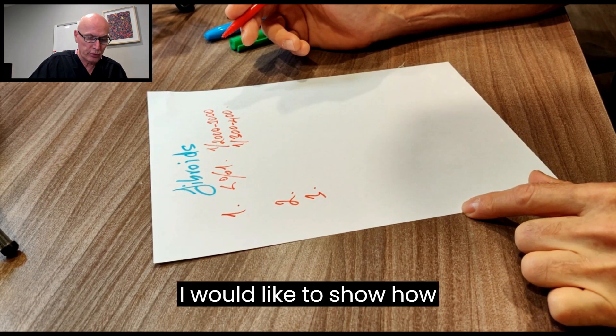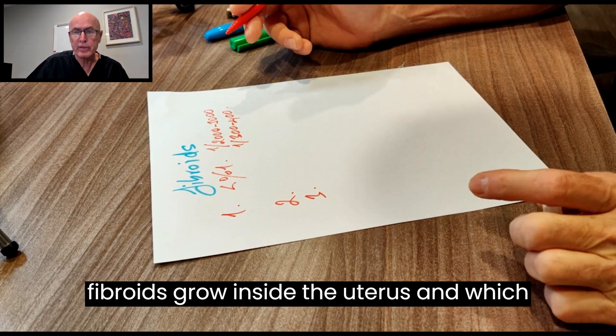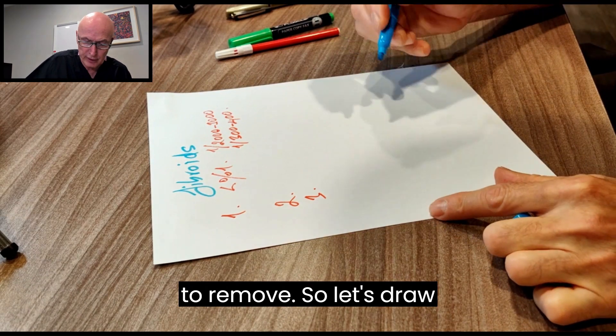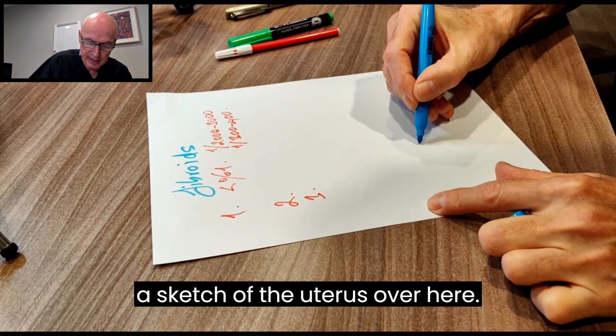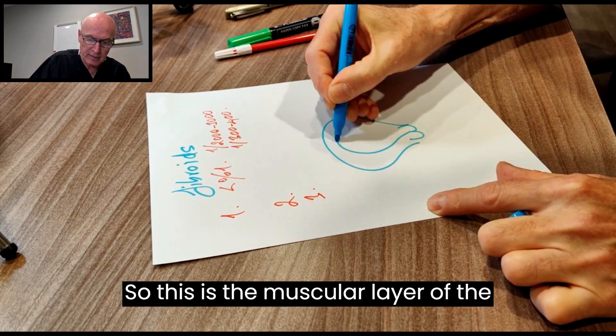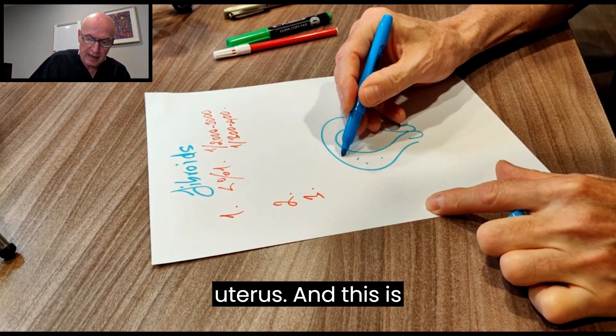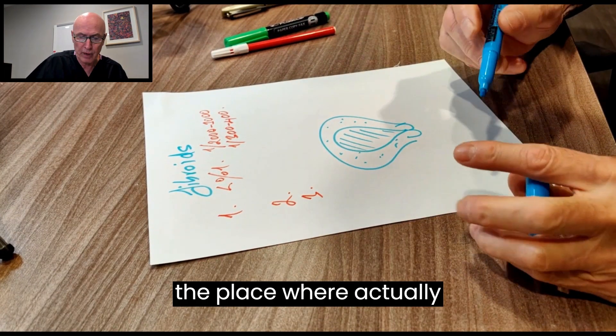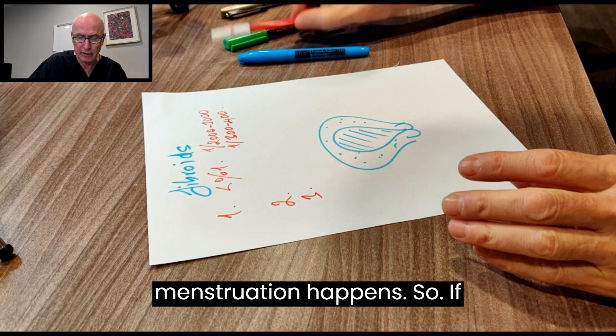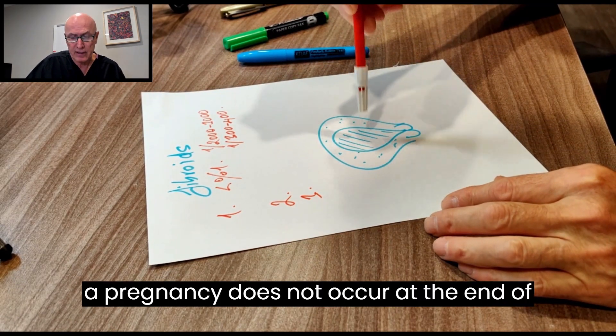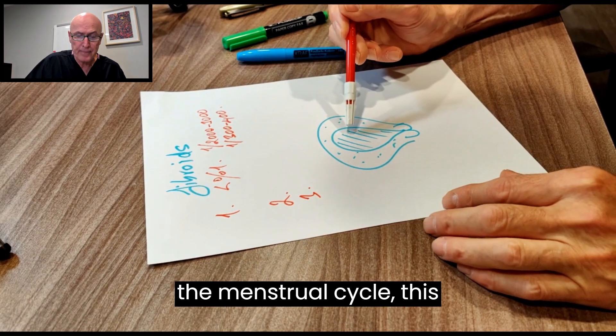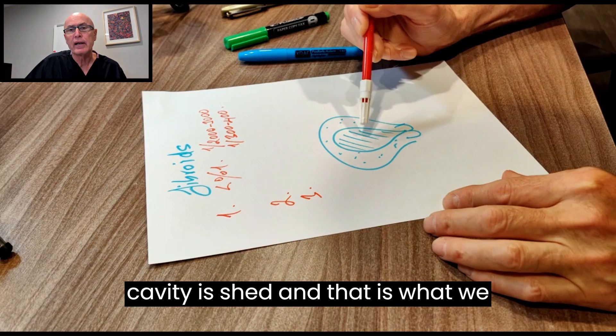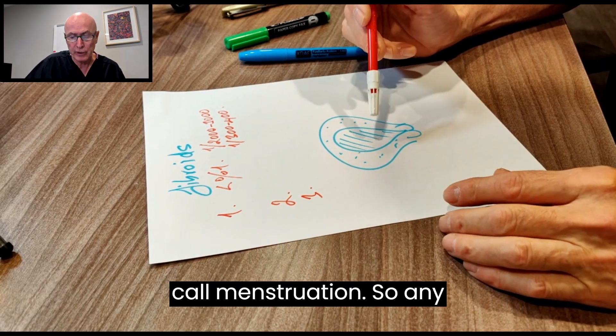I would like to show how fibroids grow inside the uterus and which ones we need to remove. Let's draw a sketch of the uterus. This is the muscular layer of the uterus, and this is the uterine cavity. This is the place where menstruation happens. If a pregnancy does not occur at the end of a menstrual cycle, the endometrial layer within the cavity is shed, and that is what we call menstruation.